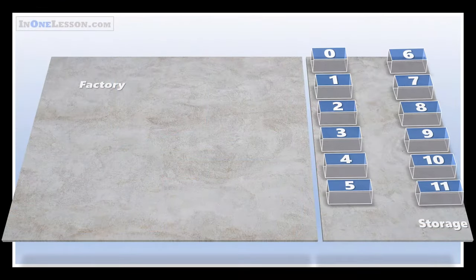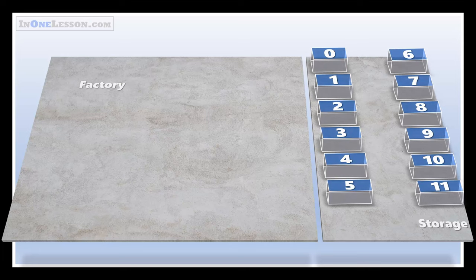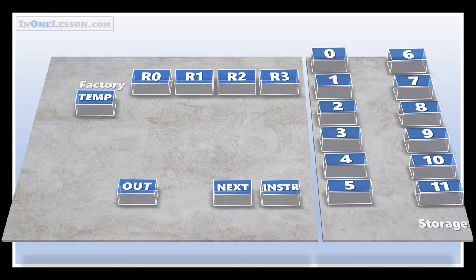The storage building has numbered containers, all the same size and all in order starting at zero. The factory also has some containers, each used for a special purpose.